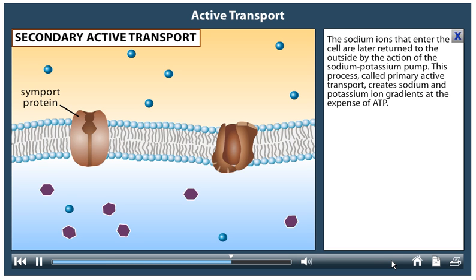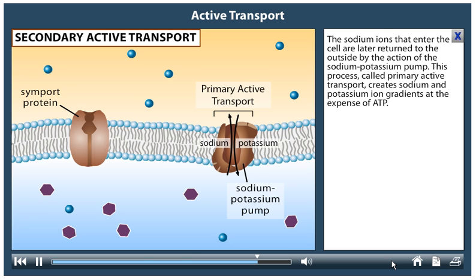The sodium ions that enter the cell are later returned to the outside by the action of the sodium-potassium pump. This process, called primary active transport, creates sodium and potassium ion gradients at the expense of ATP.